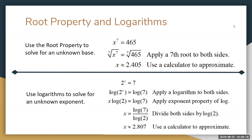The seventh root of x to the seventh is just x and the seventh root of 465, well that's calculator work essentially. Plug it into the calculator and in this case approximate it. So we're claiming that if you take 2.405 and we raise it to the seventh power we'll get approximately 465.